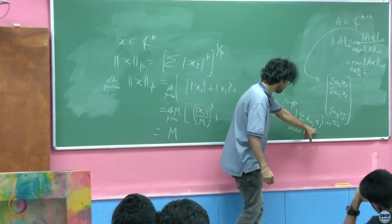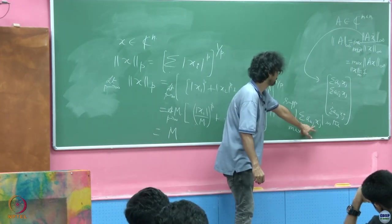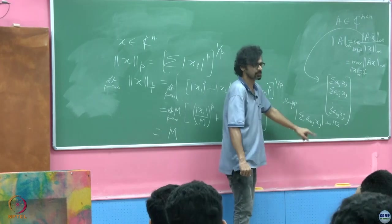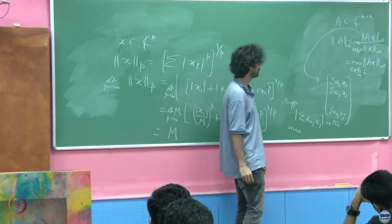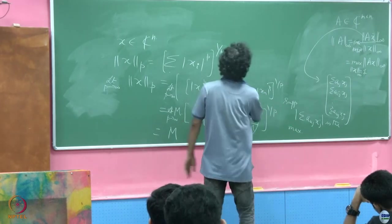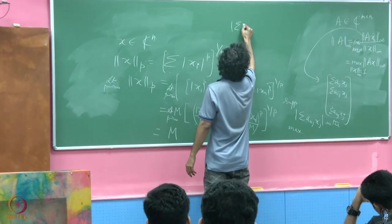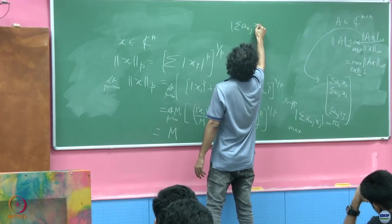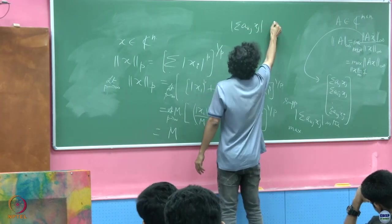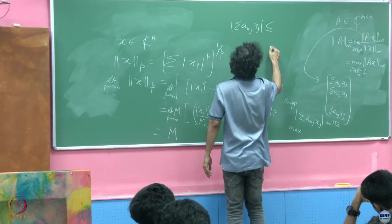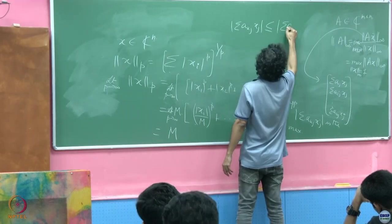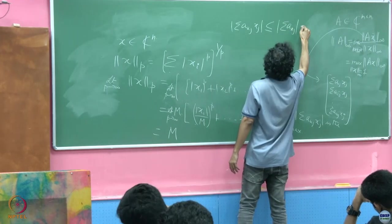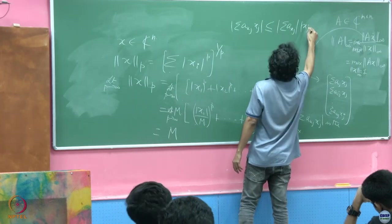One of these entries is going to correspond to the maximum — suppose this is the max corresponding to row k. We can bound the k-th entry: |Σ aₖⱼ xⱼ| ≤ Σ |aₖⱼ| |xⱼ| by the triangle inequality.